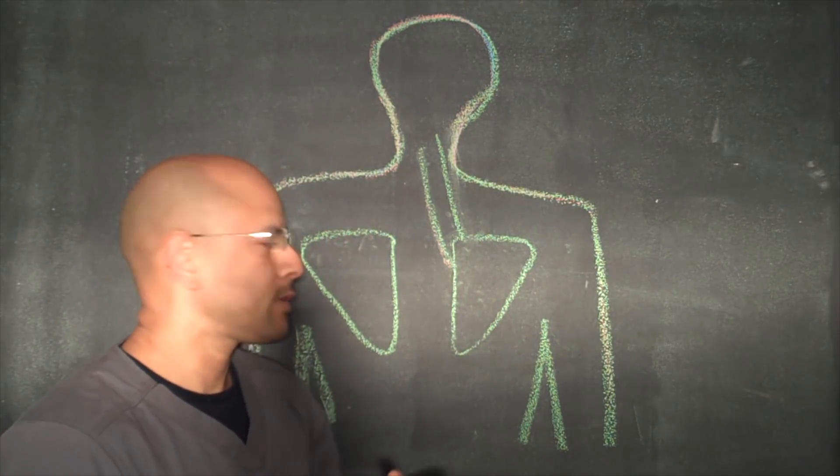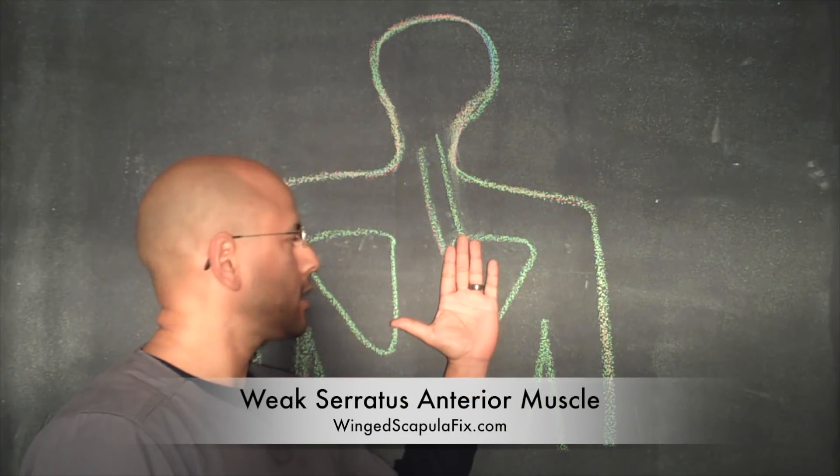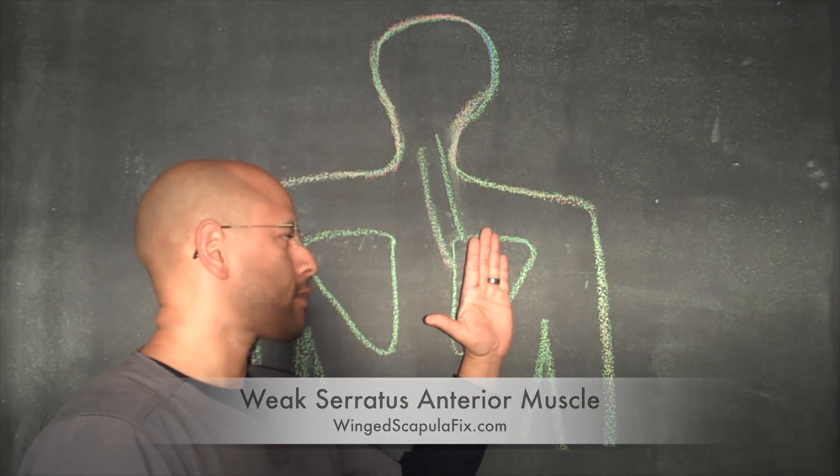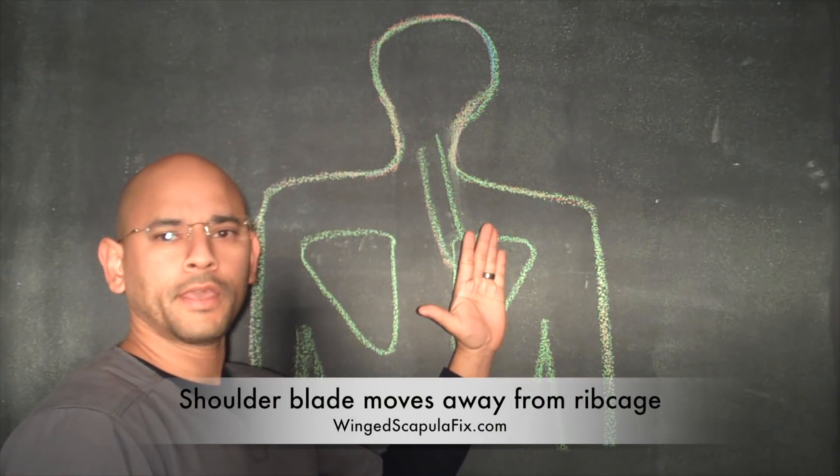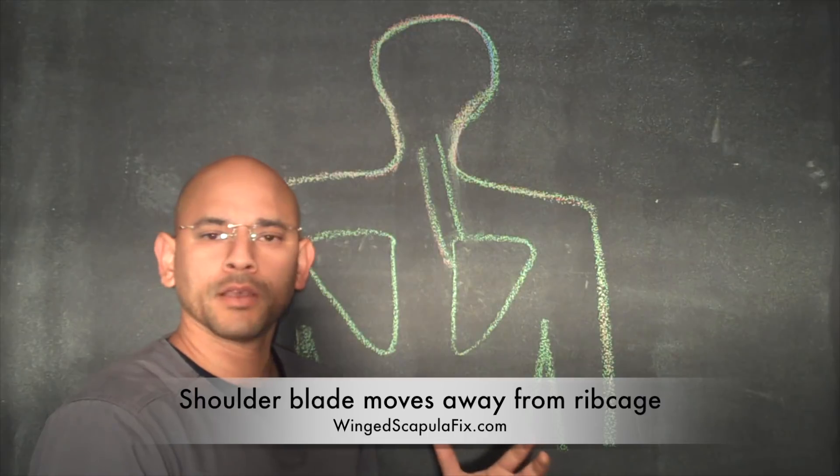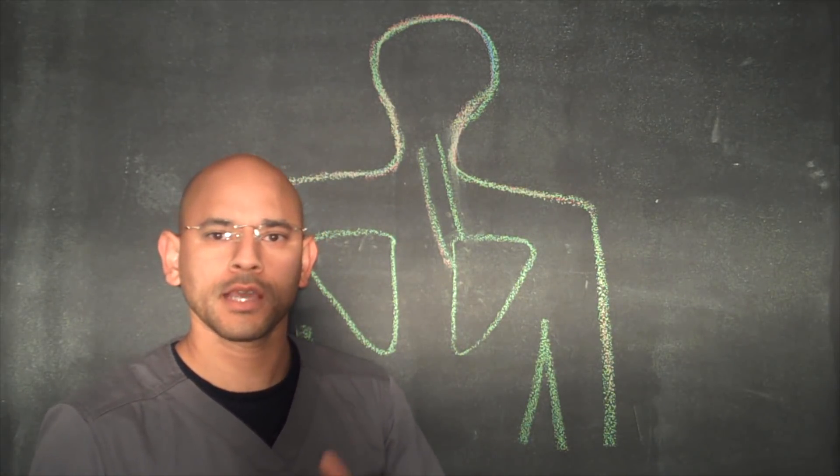Now, winging scapula happens when the muscle underneath the shoulder blade, the serratus anterior muscle, is weak and then the scapula moves in this direction. The medial border over here is up and away from the ribcage. So there's weakness in that muscle, so what we have to do is strengthen that muscle underneath and I'm going to show you an exercise in this video.